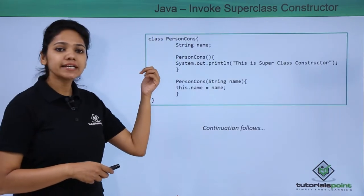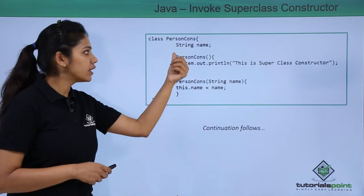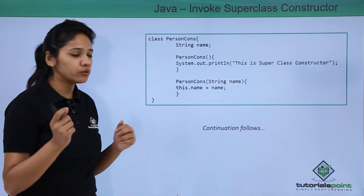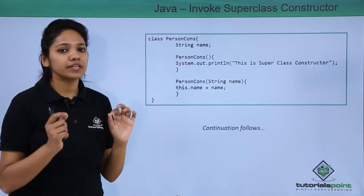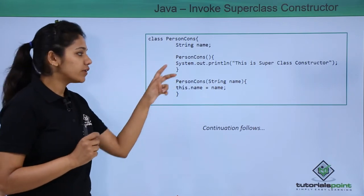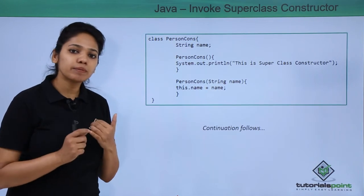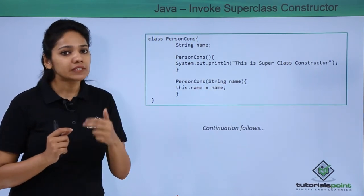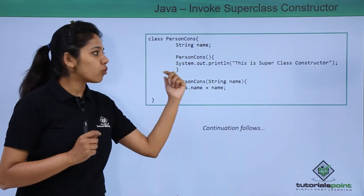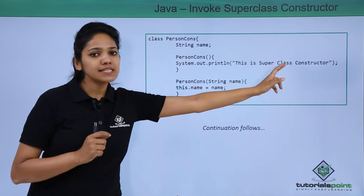We have created a class called PersonConstructor which has a variable called name of type String. We are not initializing it with any value. We create two constructors for this class — one with parameters and one without. The no-parameter constructor simply displays the message 'this is the superclass constructor'.